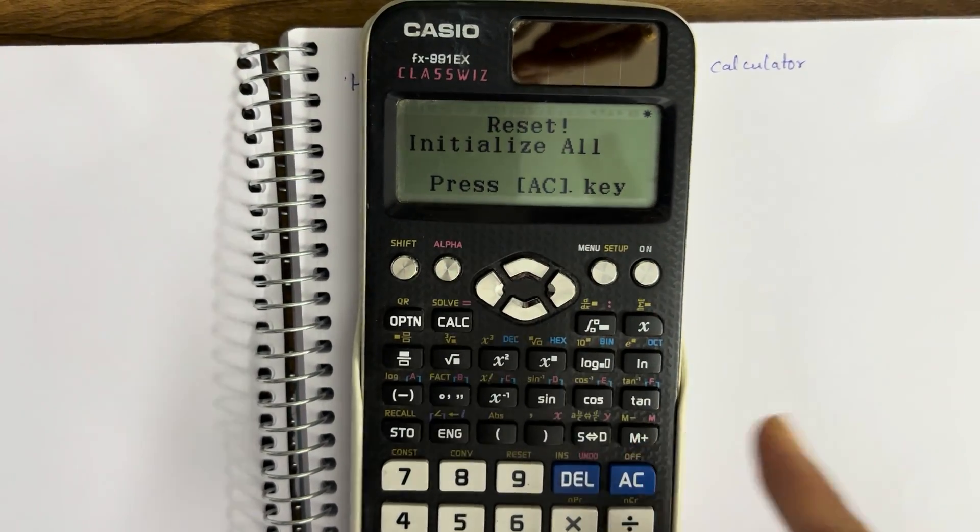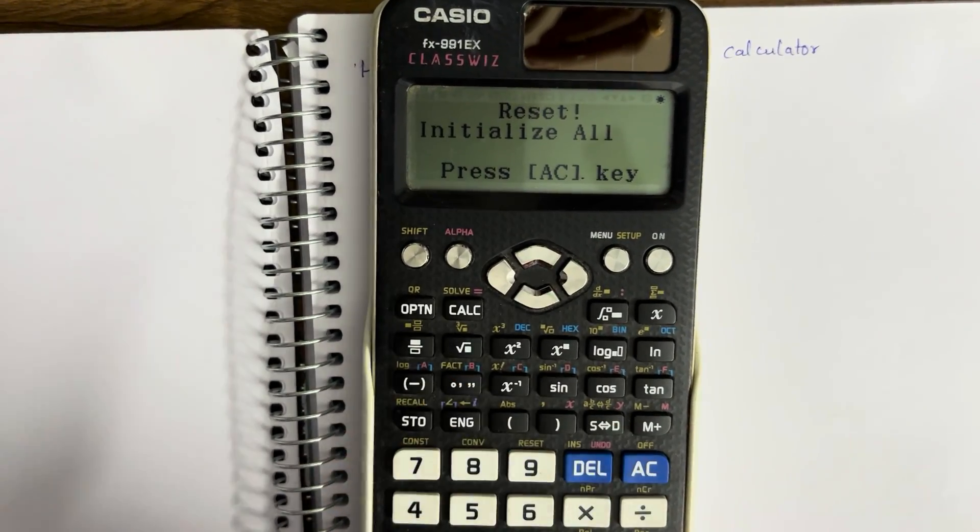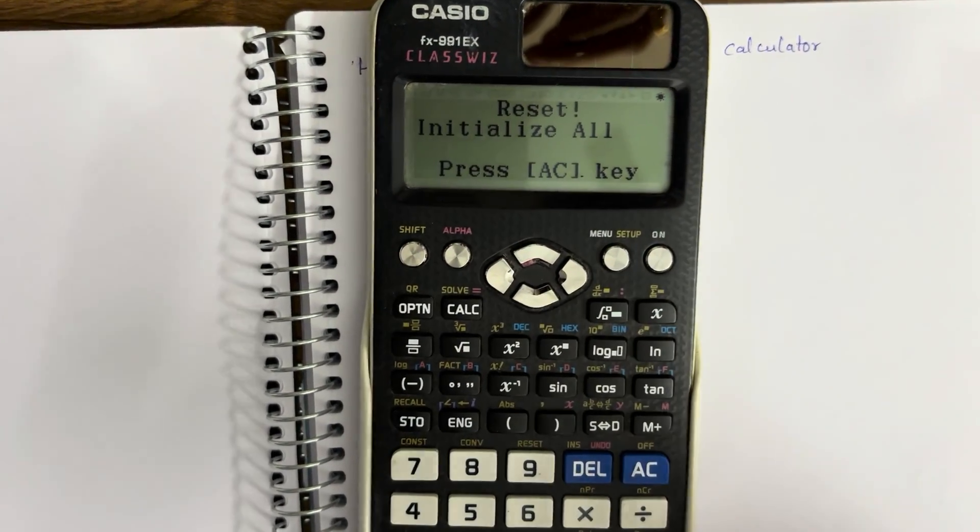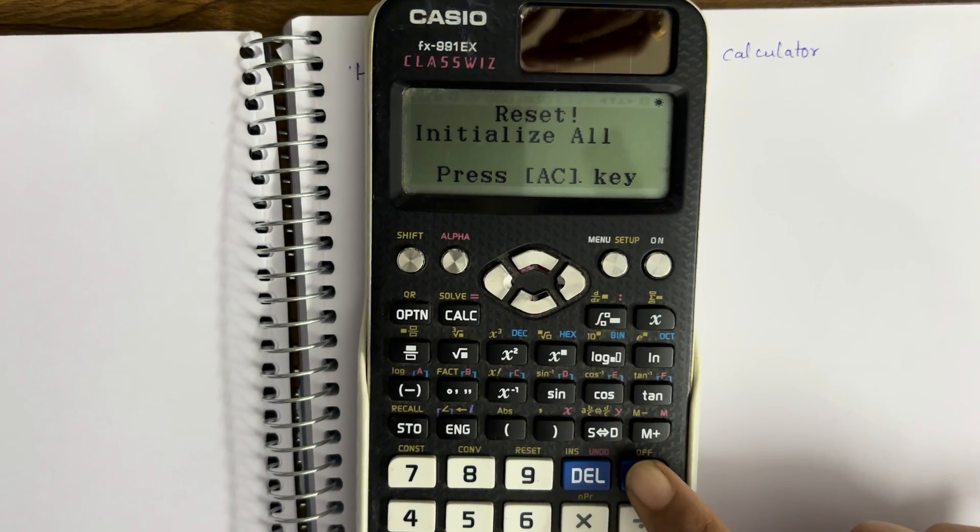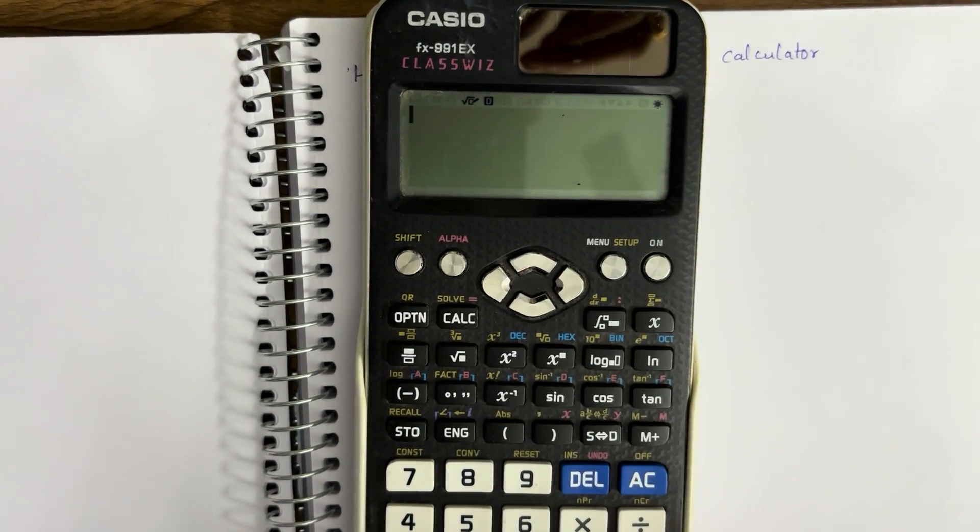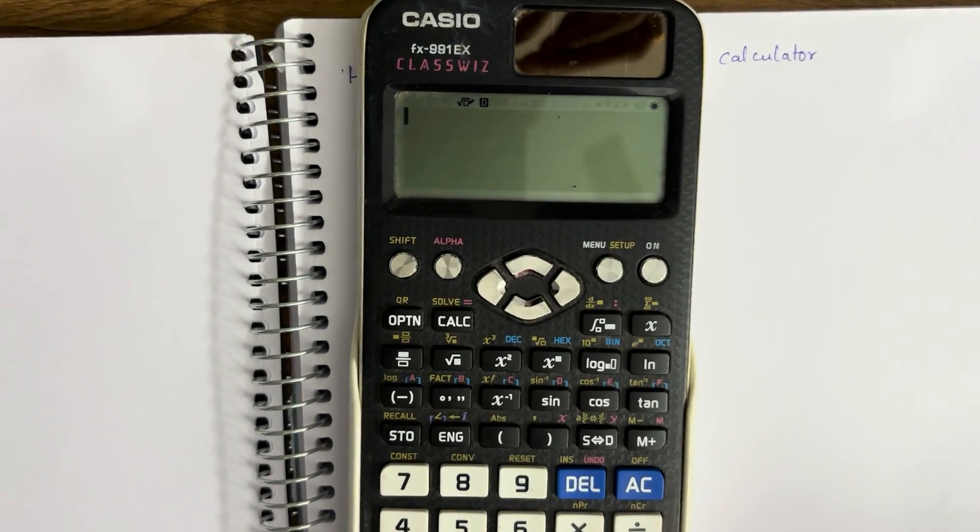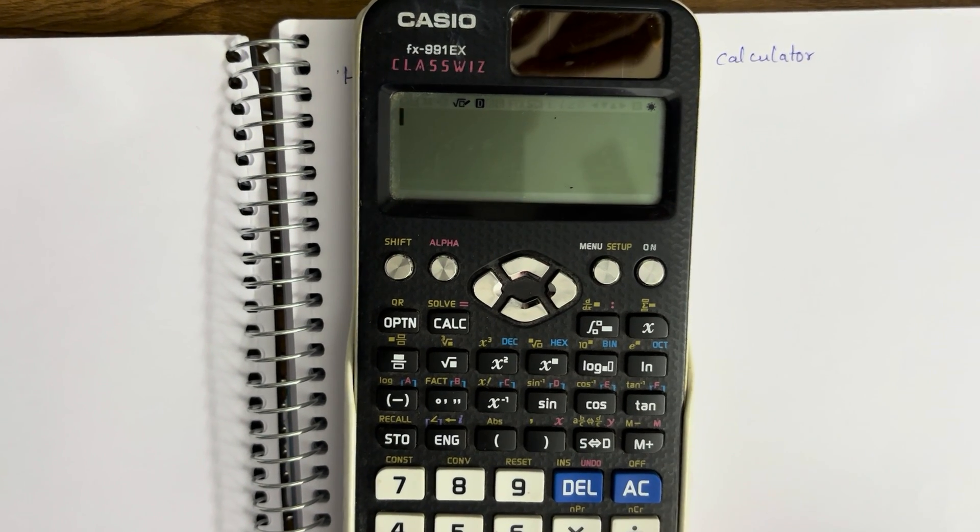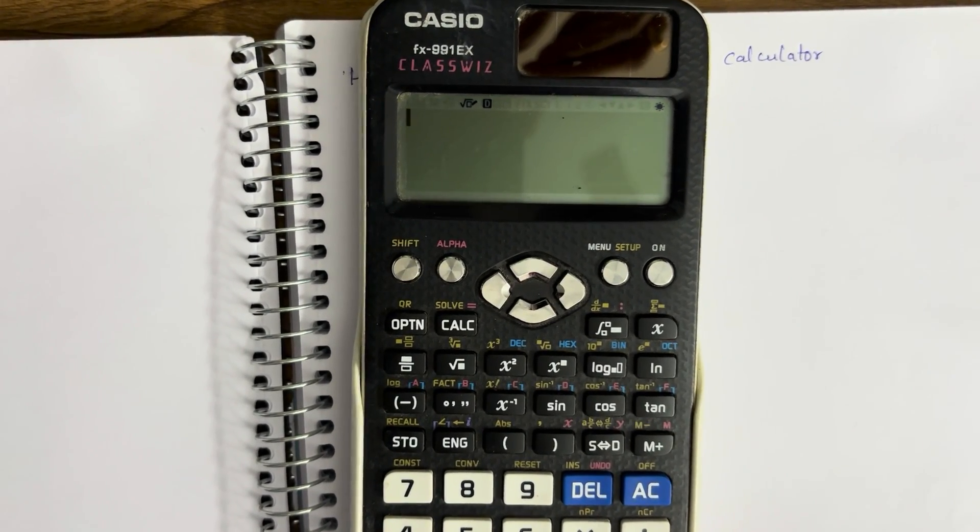Press AC and you'll go back to your normal mode. The calculator is completely reset. That's it guys, that's how you reset your scientific calculator. Thank you, we'll see you in our next video.